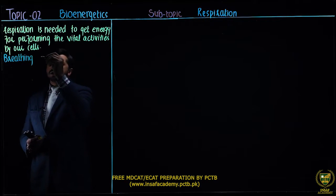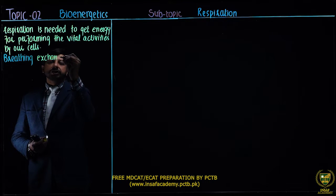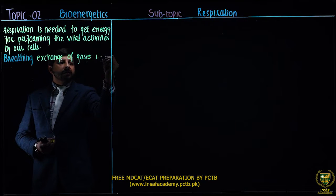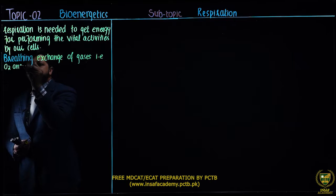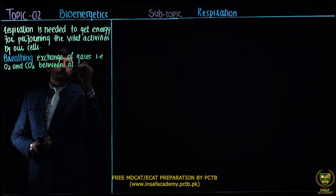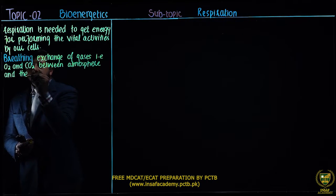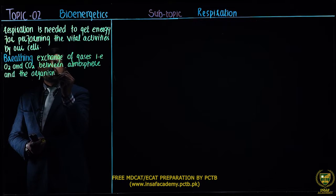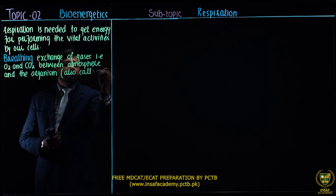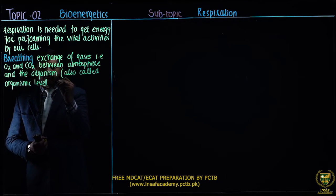The first is a mechanical process in which there is an exchange of gases — that is oxygen and carbon dioxide — between the atmosphere, or we can say environment, and the organism. This is called organismic level respiration.